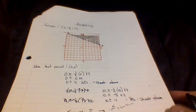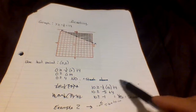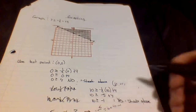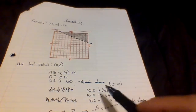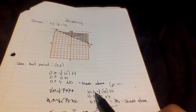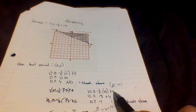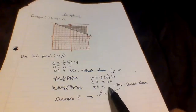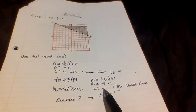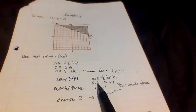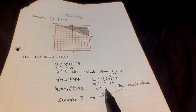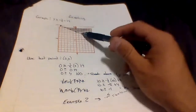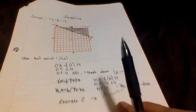To confirm shading above the line, I test the point (10, 10): 10 is greater than or equal to negative one-half times 10 plus 4, which is negative 5 plus 4, giving negative 1. So 10 is greater than or equal to negative 1 — that is true. Being that this equation is true, I shade above the line.